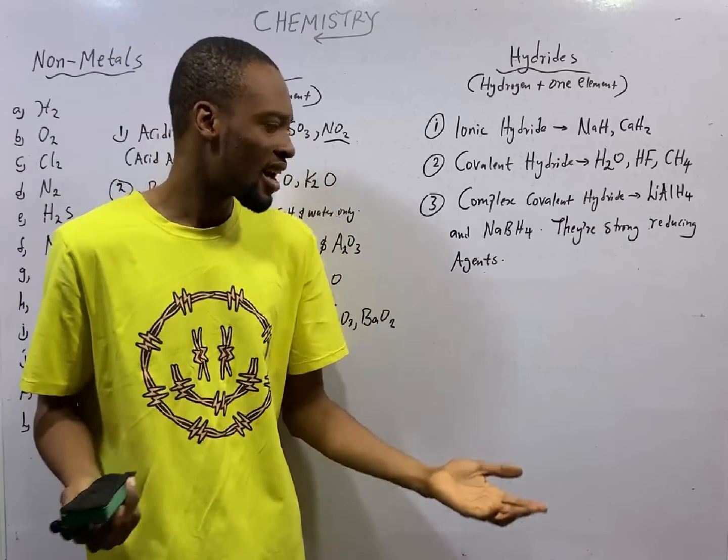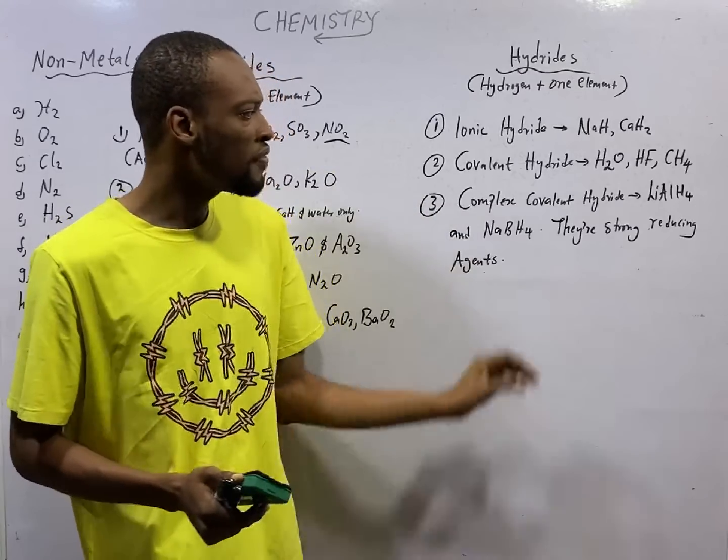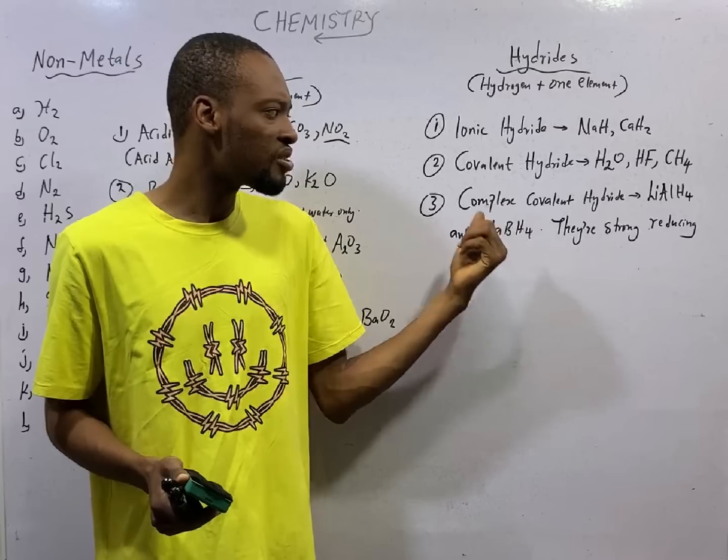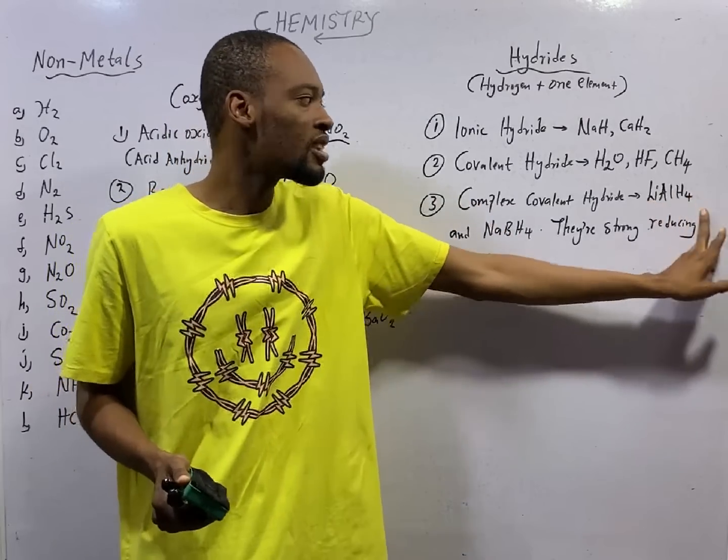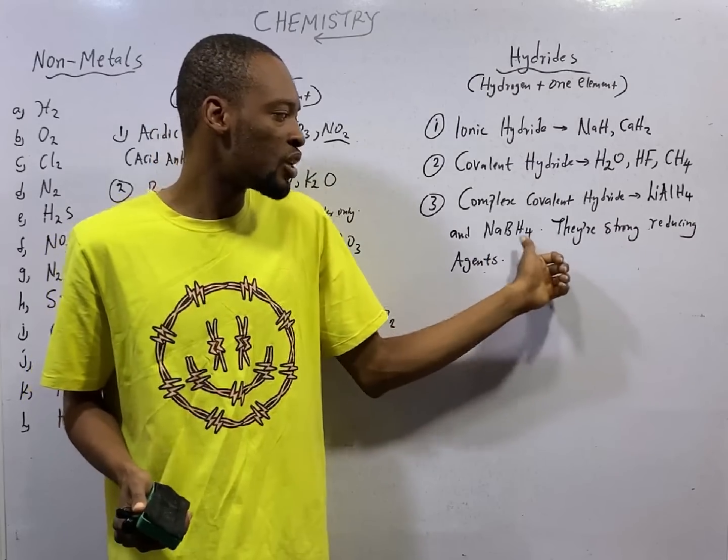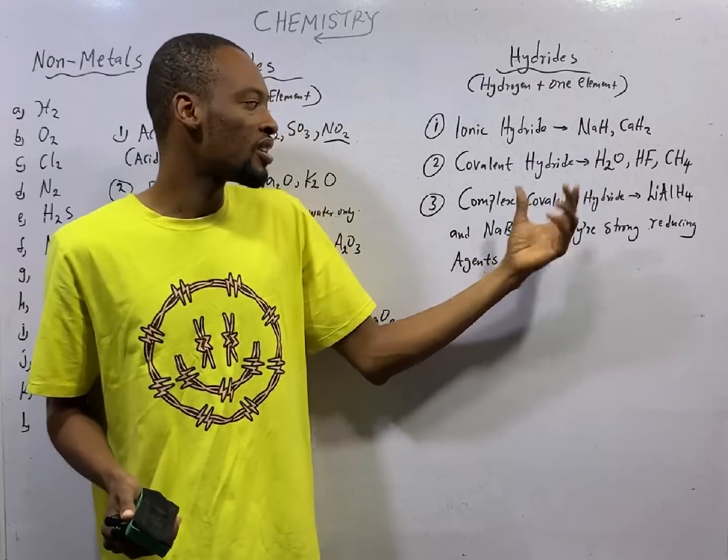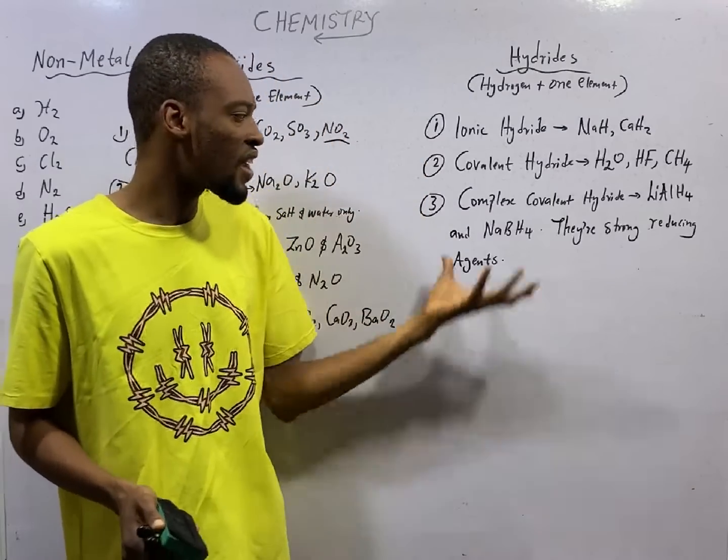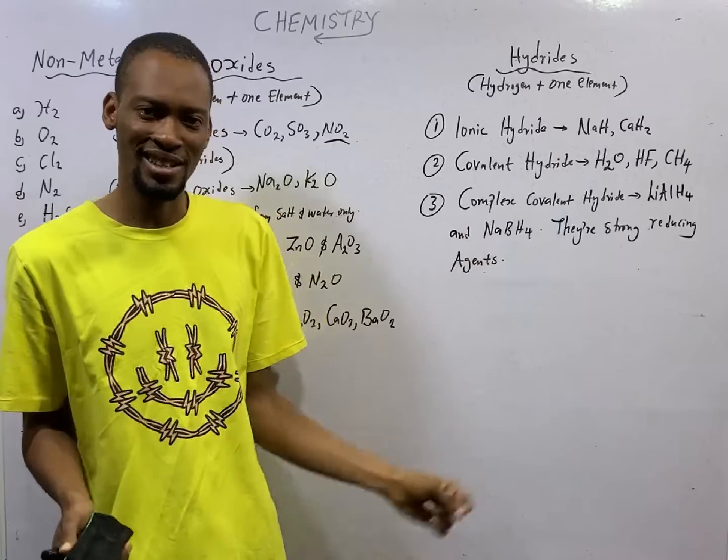And we have the complex covalent hydrides. In this case, hydrogen reacts with two other elements. Lithium tetrahydridoaluminate and sodium tetrahydridoborate. These are complex covalent hydrides, and they are very very strong reducing agents.